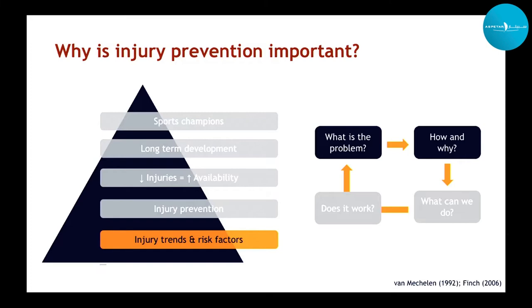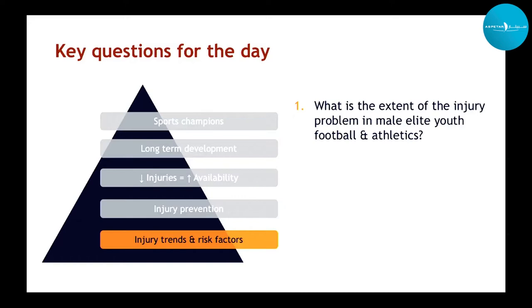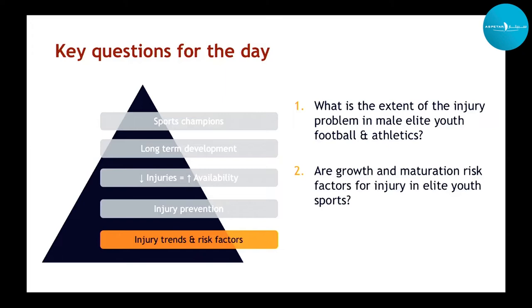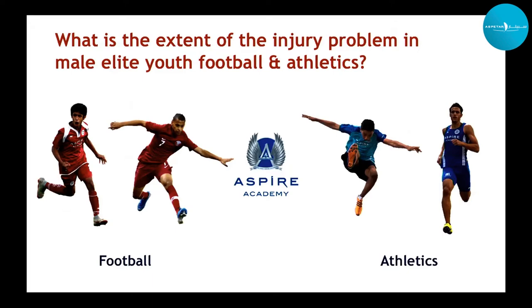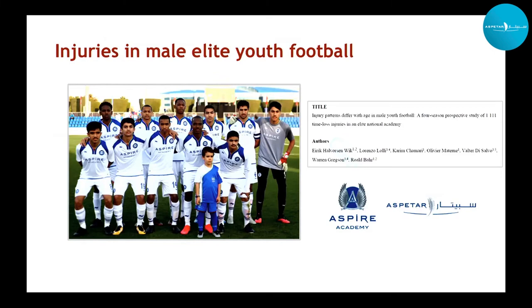Our two key questions for the day are: first, what's the extent of the injury problem — focusing on football and athletics — and second, are growth and maturation risk factors for injury? We're talking about football and athletics because that's what I've been involved with at Aspire, but they are also two major global sports. The first results we'll present are from a study recently accepted into BJSM, a collaboration with Aspire Academy Football Performance and Science Department, looking at injuries in the football group.